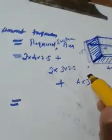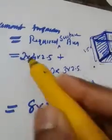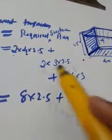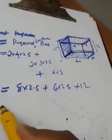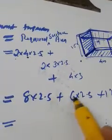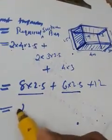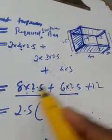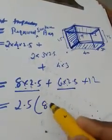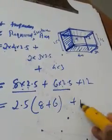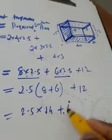So the required surface area is: 2 into 4 into 2.5, plus 2 into 3 into 2.5, plus 4 into 3. That gives 8 into 2.5, plus 6 into 2.5, plus 12. Taking 2.5 as a common factor from the first two terms: 2.5 into (8 plus 6), plus 12 equals 2.5 into 14, plus 12.